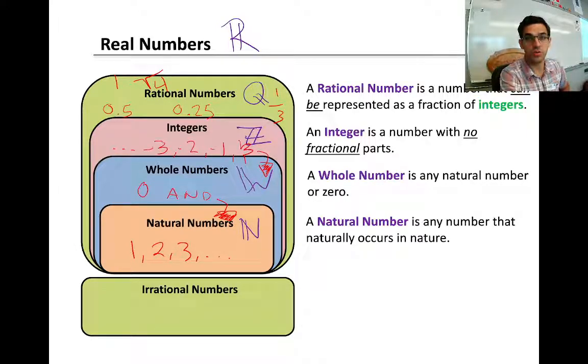Rational numbers are any number that can be written as a fraction. 0.5 can be written as one over two. 0.25 can be written as one over four, one over three. And then any integer, any whole number, and any natural number can be written as a fraction. Therefore, they are all rational numbers. Square root of four can be written as two over one. One can be written as one over one.